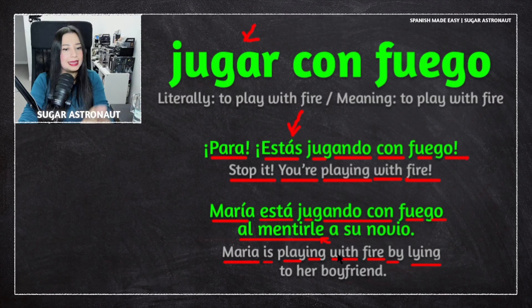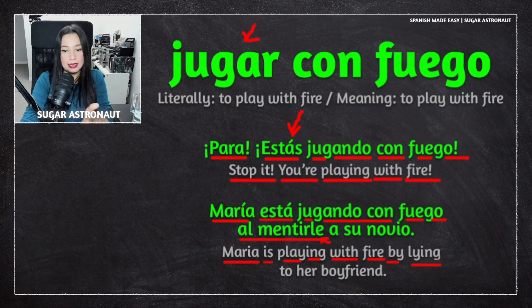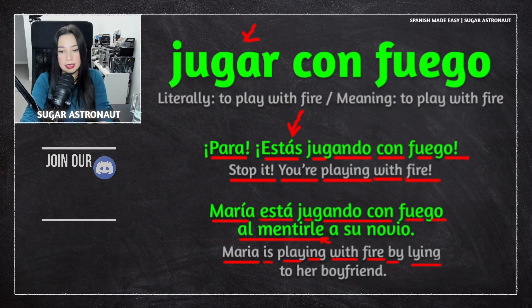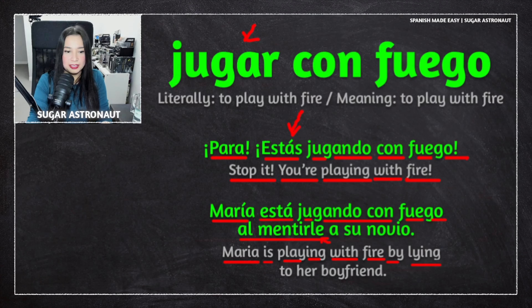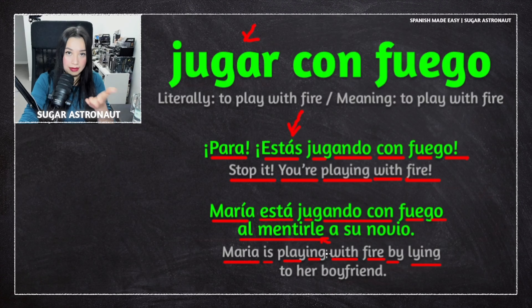Al mentirle. Al means 'by' in some situations. Al can also mean 'to the,' 'into the,' or 'in the.' And also 'by' when you're explaining a situation — for example, you're playing with fire because you're lying to your boyfriend. By lying — al mentirle — to him.